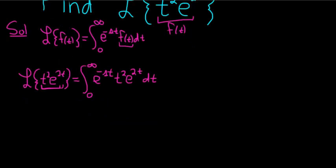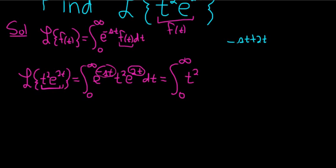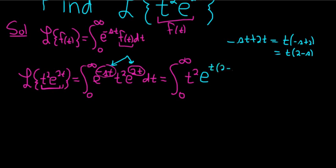At this point we can combine some like terms — we can add the exponents on the exponentials. So this is equal to the improper integral from 0 to infinity. We're going to add the negative st to the 2t: negative st plus 2t. We can pull out a t, so this is t times (negative s plus 2), or t(2 minus s). So this gives us e to the t(2 minus s), dt.